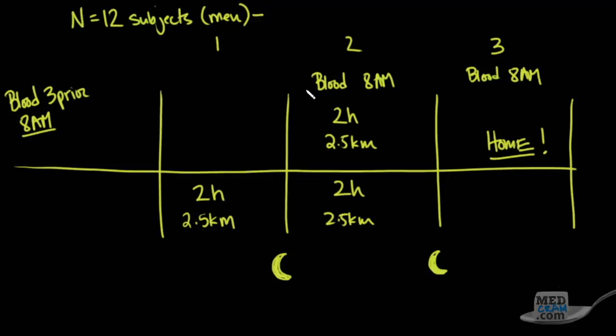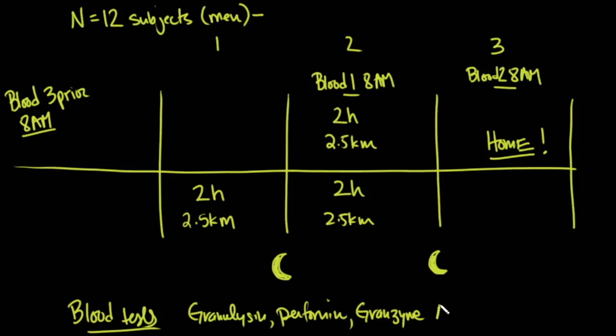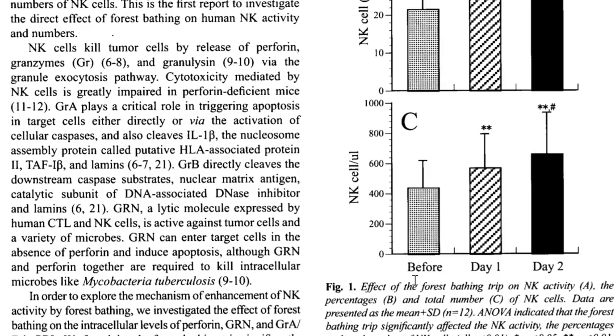Now even though they took blood here on the second day, this was really after one day of completion, so this is going to be known as blood on day number one, and this is going to be known as blood after day number two. So what were they looking for on the blood tests? They looked at the leukocytes or white blood cells. They also looked at those things that we talked about: granulysin, perforin, and granzyme A and B.